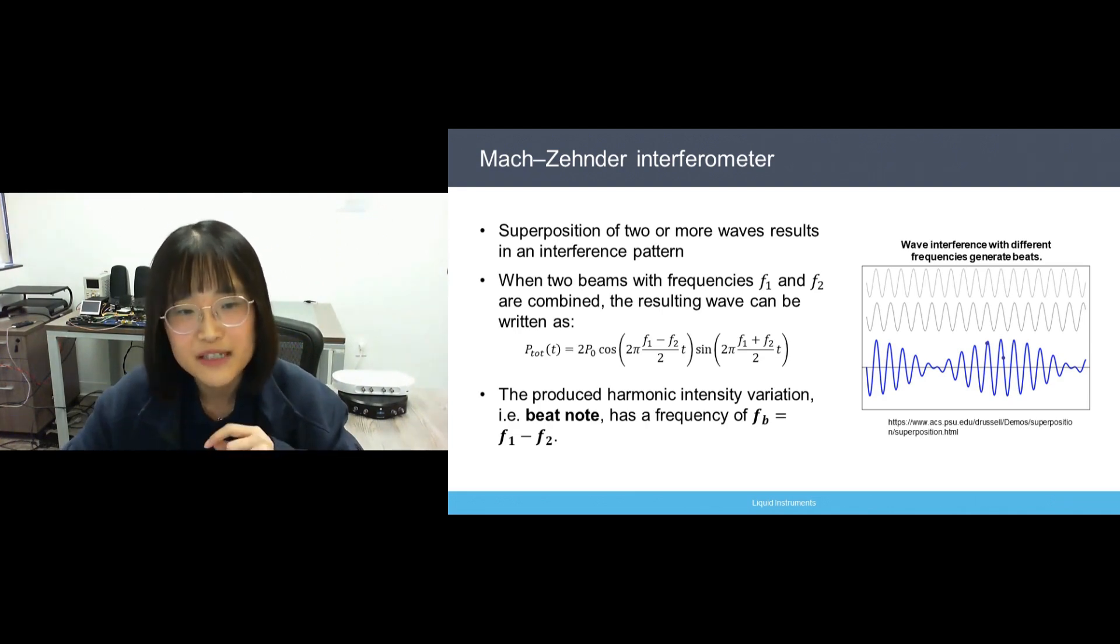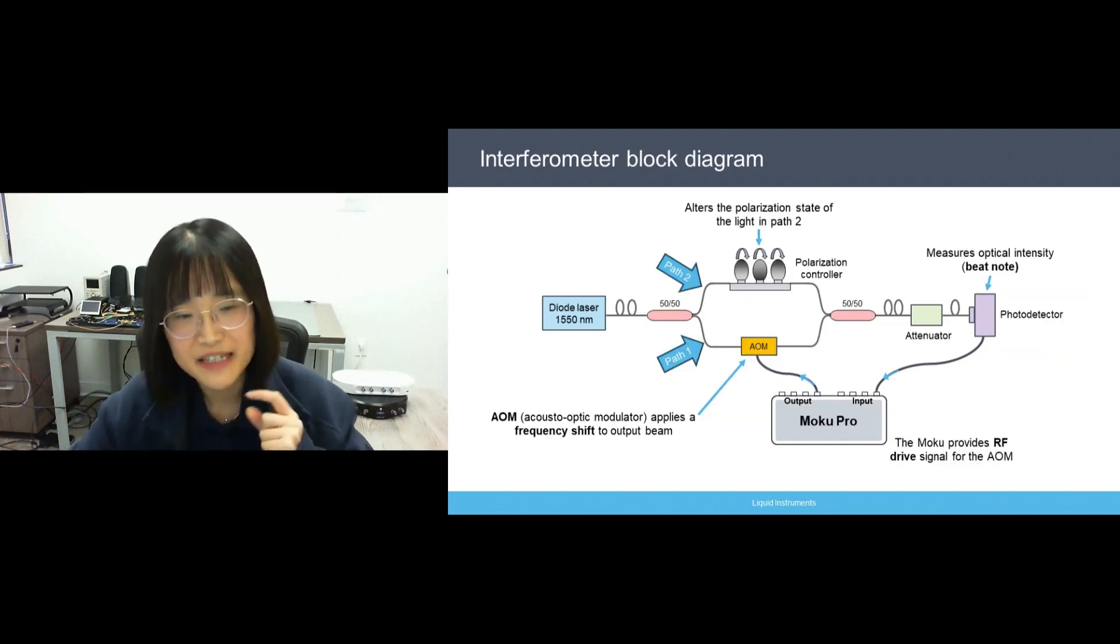Now let's take a more detailed look at our interferometer test setup. Here we have a schematic illustration. A dial laser at 1550 nanometer is split into two paths.